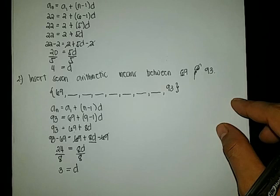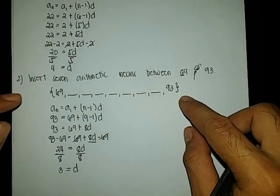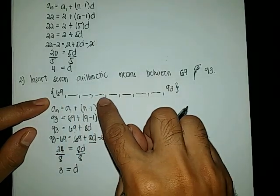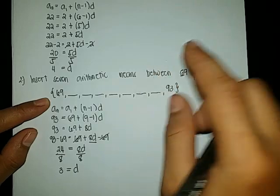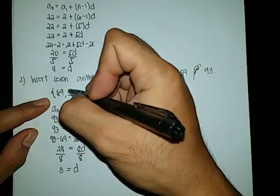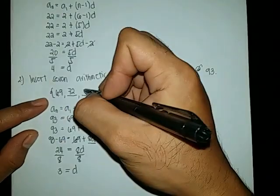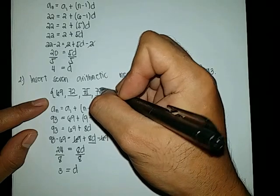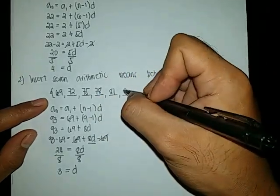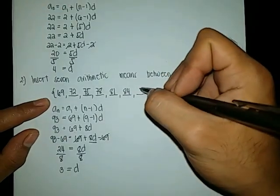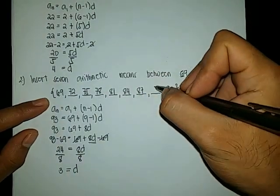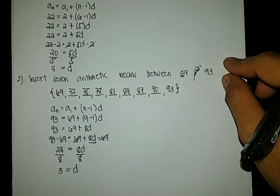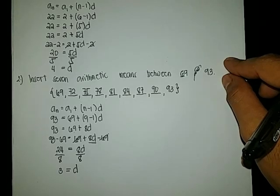Now let us insert the 7 arithmetic means between 69 and 93 by adding 3 to each term: 69 plus 3 is 72, 72 plus 3 is 75, 75 plus 3 is 78, 78 plus 3 is 81, 81 plus 3 is 84, 84 plus 3 is 87, 87 plus 3 is 90, and 90 plus 3 is 93. That is all about arithmetic means.